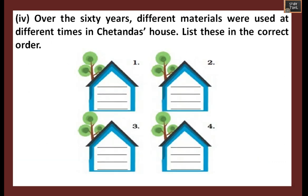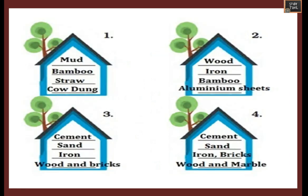Over 60 years, different materials were used at different times in Chetan Das's house - list these in the correct order. First, they lived in a mud house with a bamboo and wood frame, also using cow dung. Next, they moved to a house with unbaked bricks. Then they used marble chips and baked bricks. This is how they used different materials at different times.